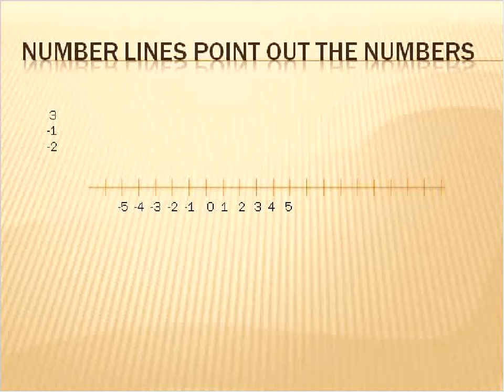So for our next practice, we are going to actually put our own dots on number lines. And to do that, we've got three points: 3, negative 1, negative 2, and I'm going to put those points on this number line.